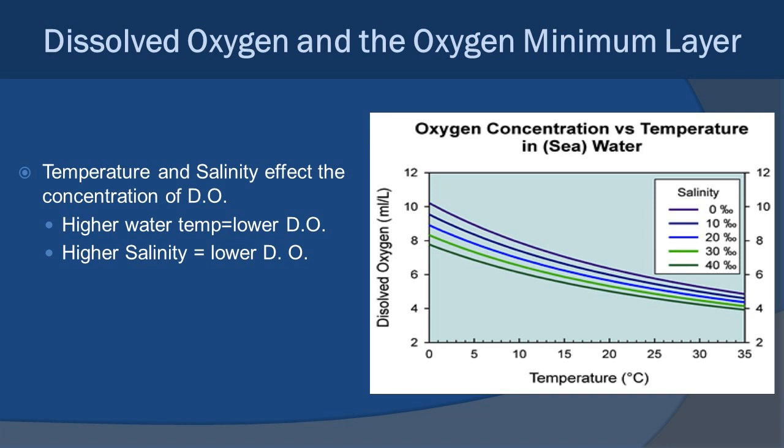Oxygen is really important for most animal life, including marine life. However, the concentration of dissolved oxygen varies throughout the ocean. Generally speaking, the higher the water temperature, the lower the dissolved oxygen, and the higher the salinity, also the lower the dissolved oxygen. You can see this trend in the graph, with temperature on the x-axis and dissolved oxygen on the y-axis. Cooler temperatures of zero to five degrees Celsius have the highest dissolved oxygen, correlating with low salinity — that top purple line is zero parts per thousand.